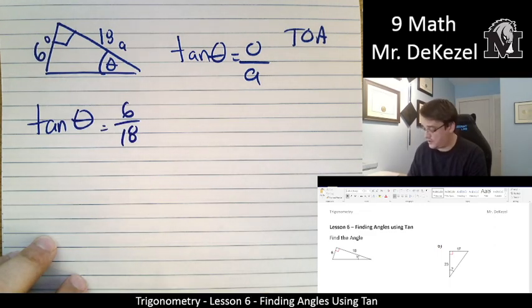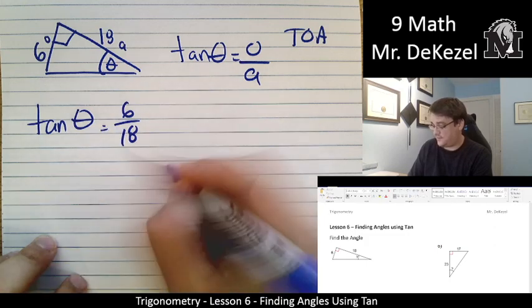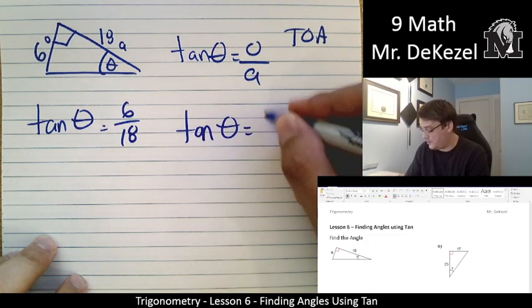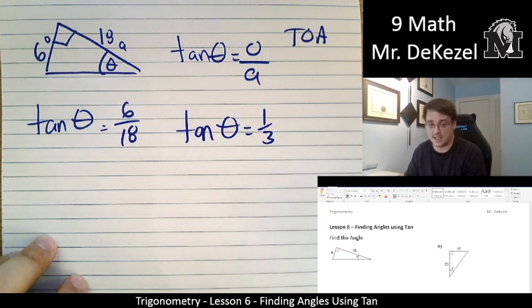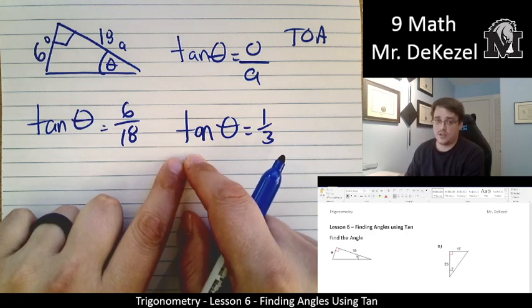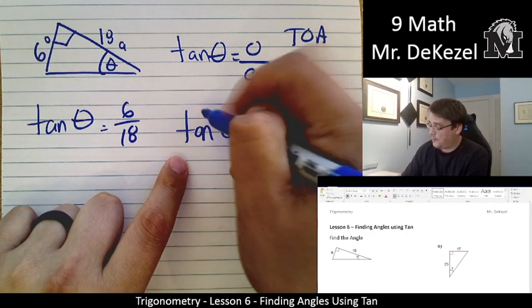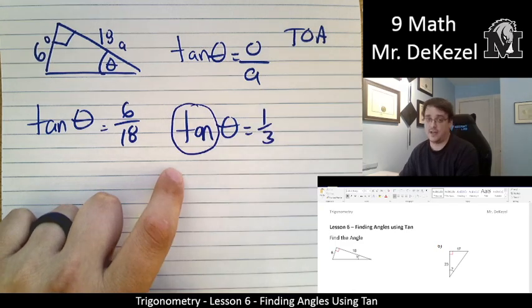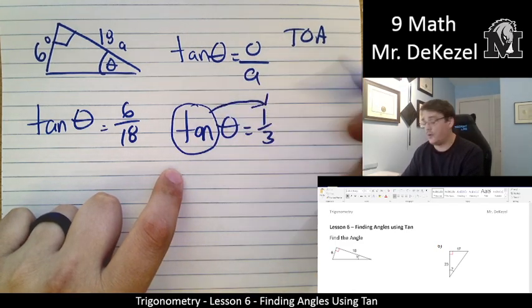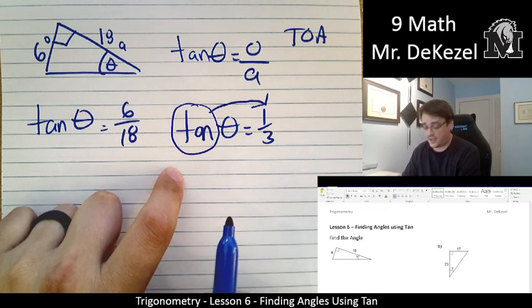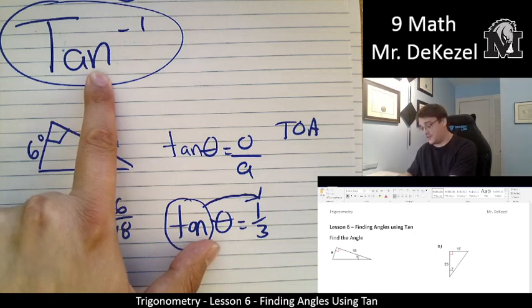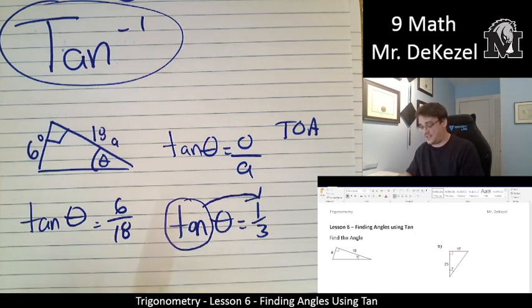So I'm going to go ahead and just reduce that real quick. So this is tan of theta is equal to 1 third, right? Divided them both by 6. Now what we're going to do is we are going to move this tan over to the other side, and you know how I always say when I move something to the other side, we are going to do the opposite of it. Well, the opposite of it is tan inverse. Yes, I circled tan minus 1. That's tan inverse.